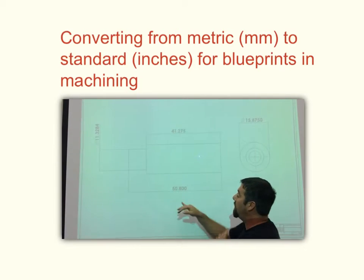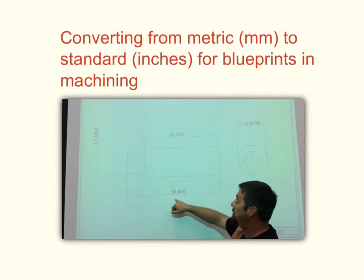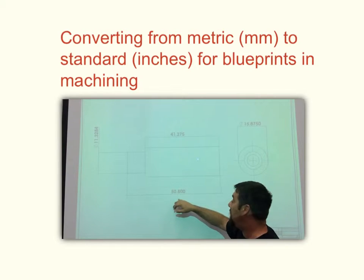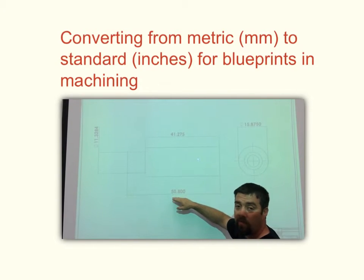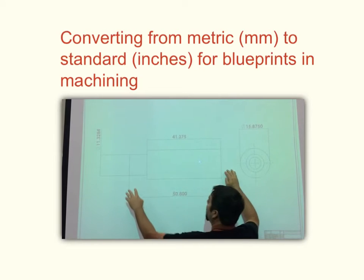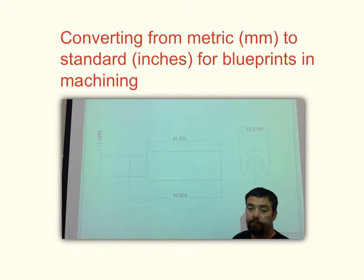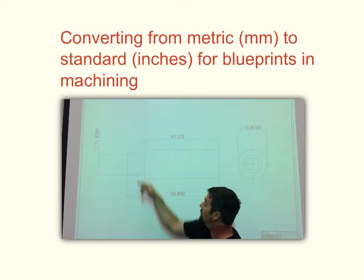So you've got to take this and figure out how to convert it to inches, and the best way to do that is take this number, divide it by 25.4, will give you your overall dimension of your part, and so on and so forth.